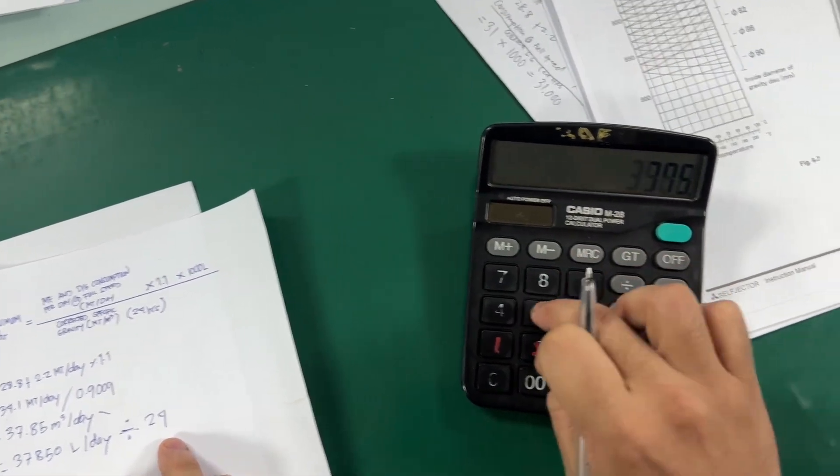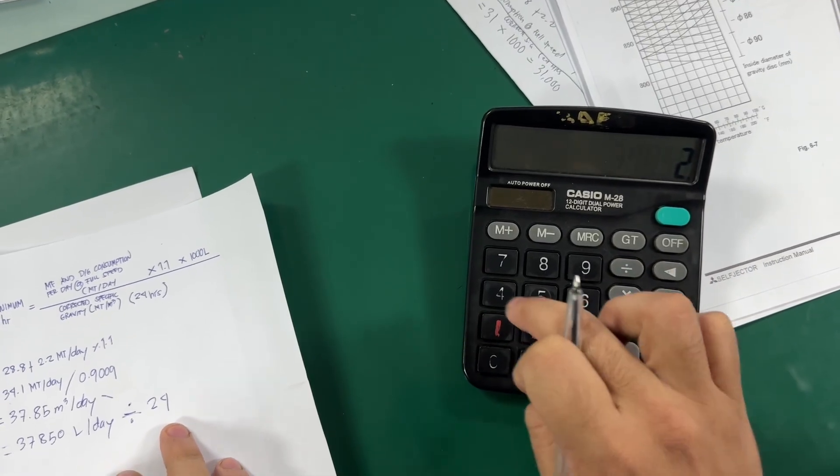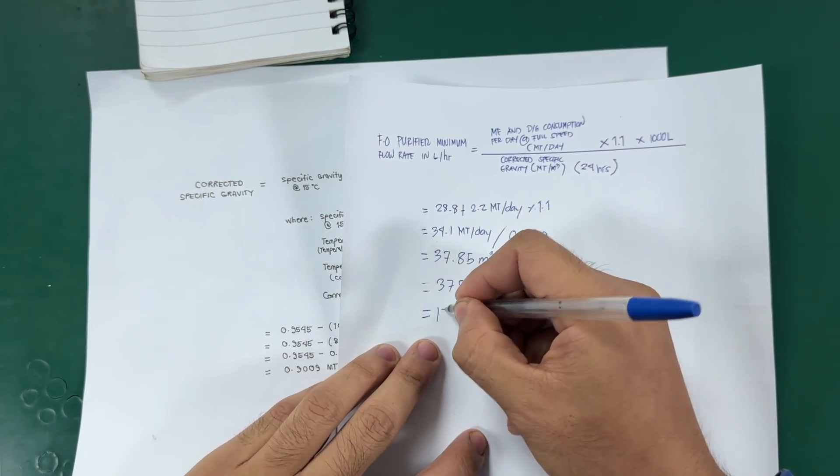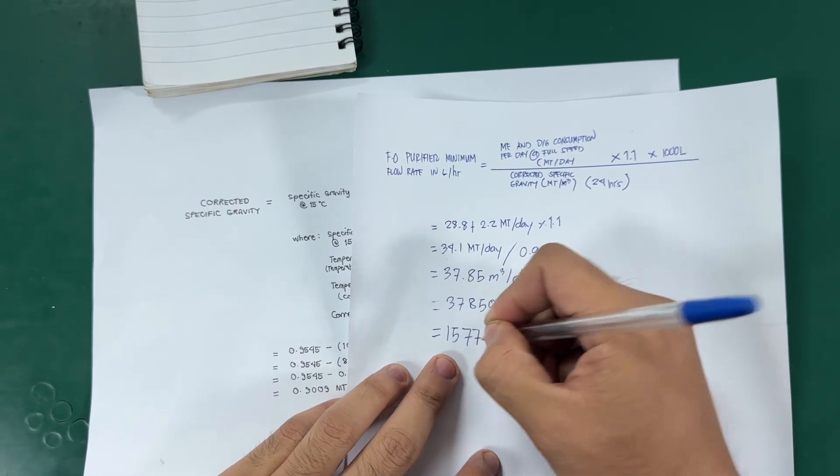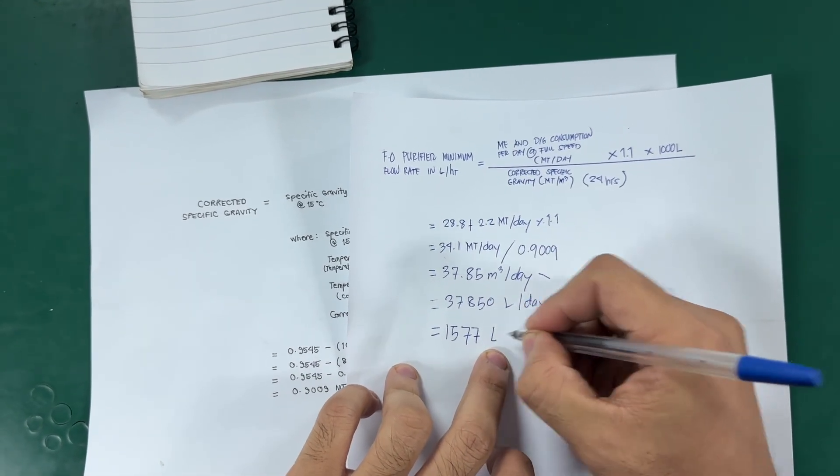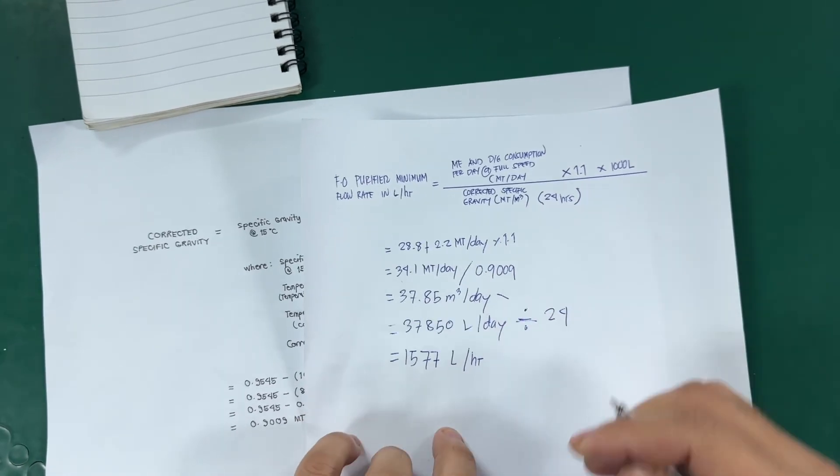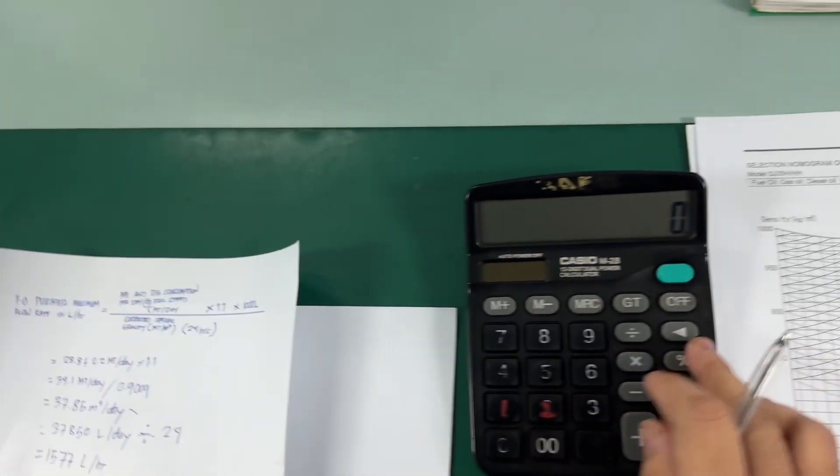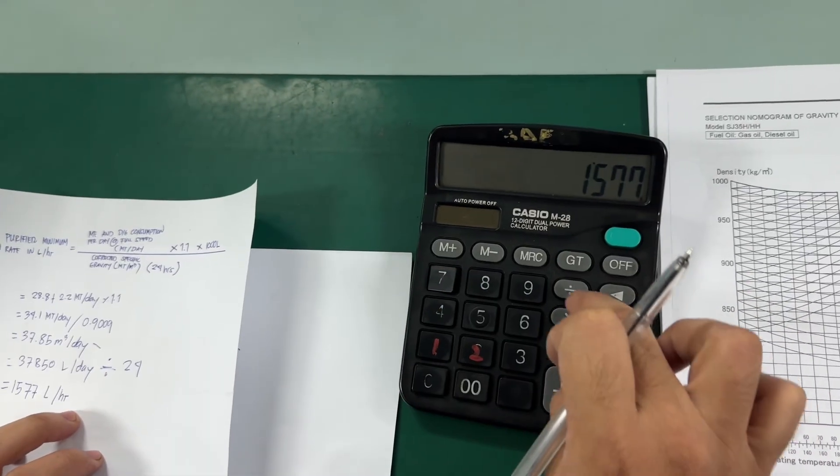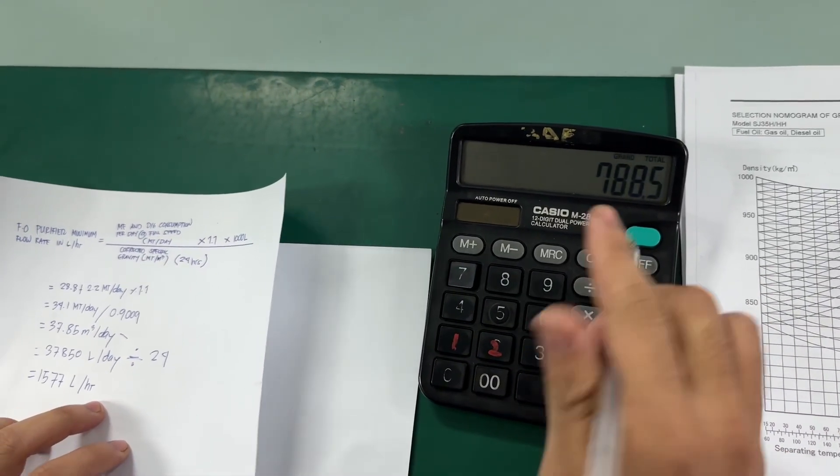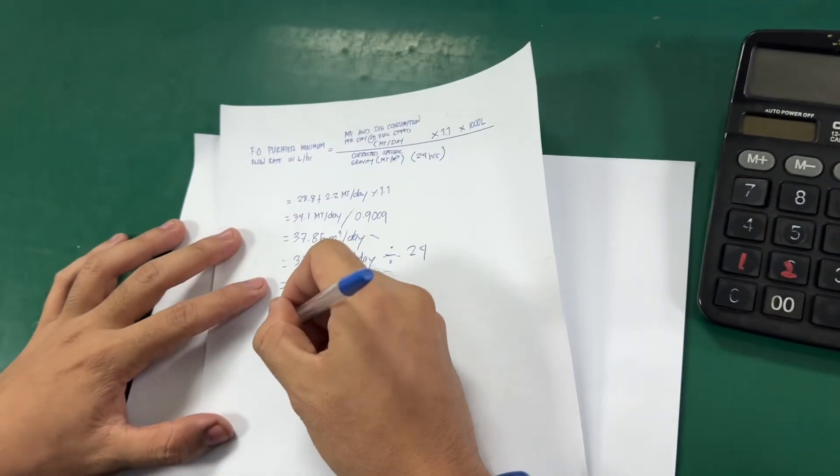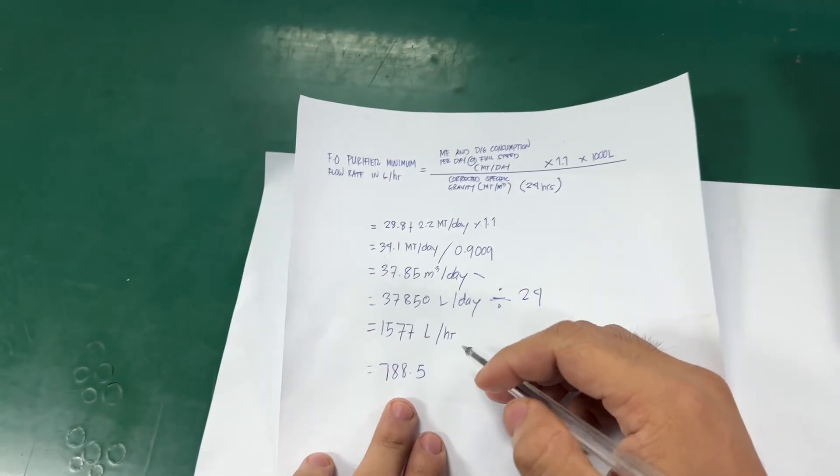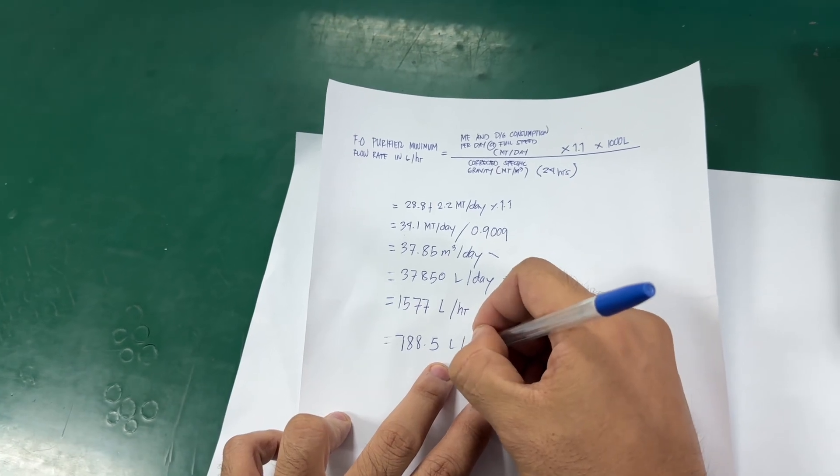37,850 divide 24 is equals to 1577 liters per hour. If our purifiers are running in parallel, we need to divide it by 2. 1577 divided 2 is equal to 788.5 liters per hour.